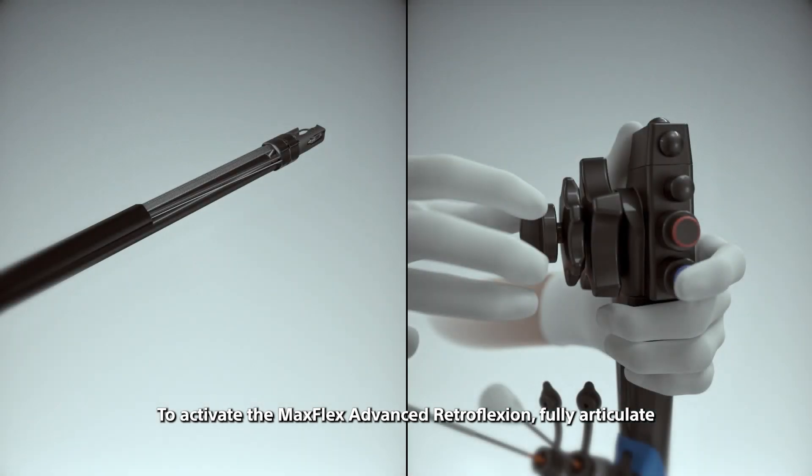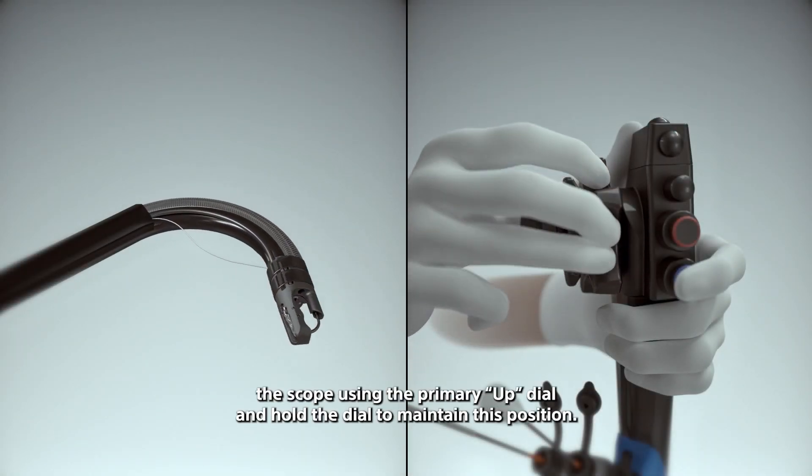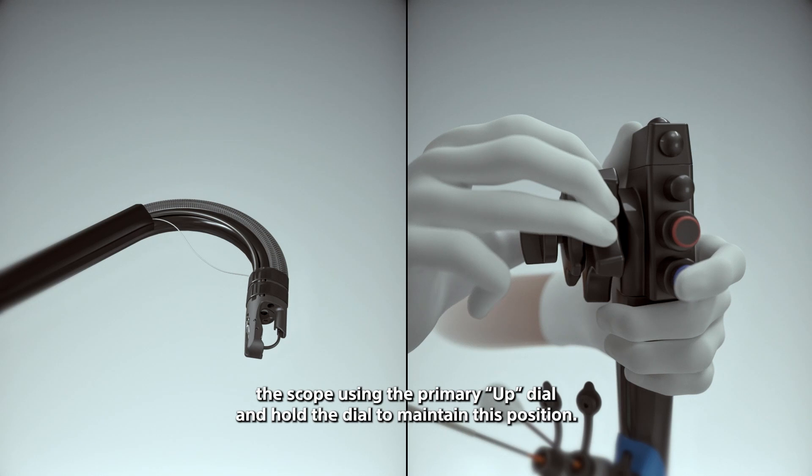To activate the MaxFlex advanced retroflexion, fully articulate the scope using the primary up dial and hold the dial to maintain this position. Do not lock the scope wheel.